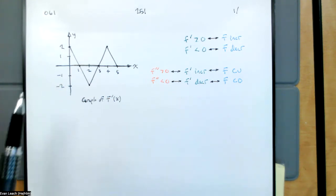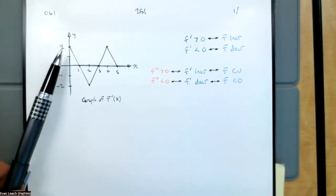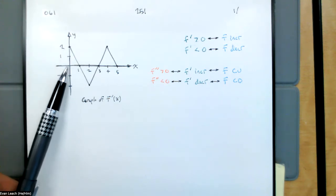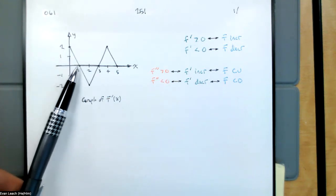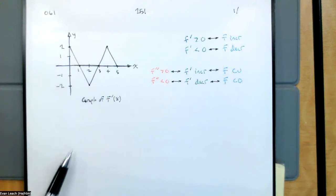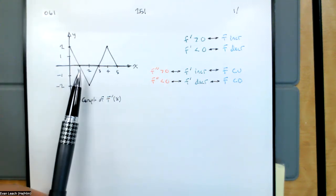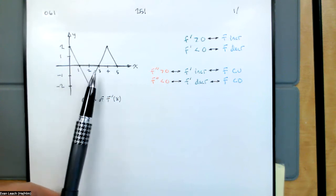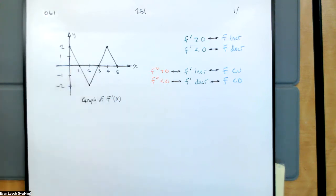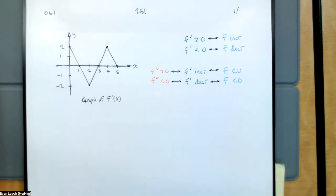So for this graph, we can see the derivative is positive on the interval from 0 to 1, and so our function should increase on the interval from 0 to 1. Then on the interval from 1 to 3, our derivative is negative, so the function will be decreasing. And then from 3 to 5, our derivative is positive, so the function will go back to increasing.